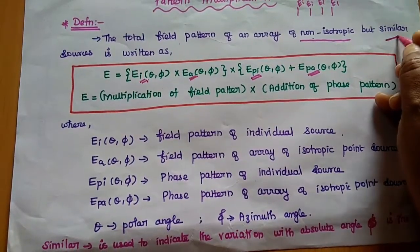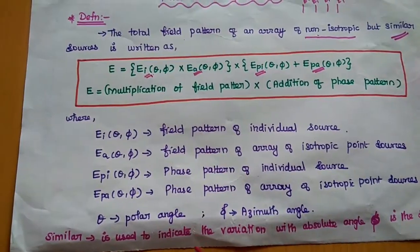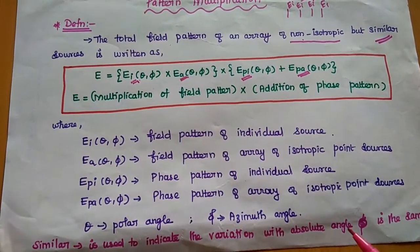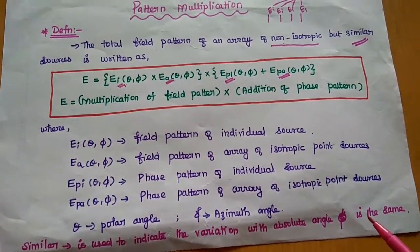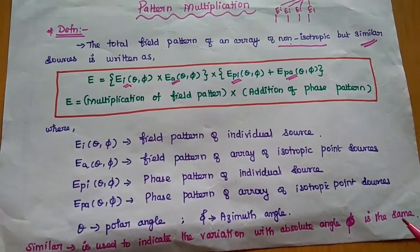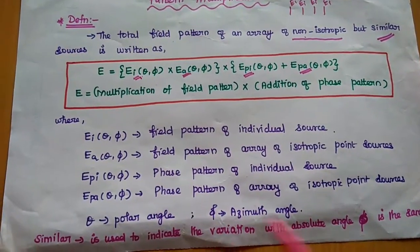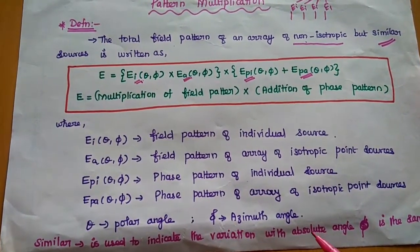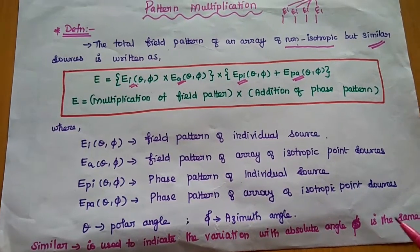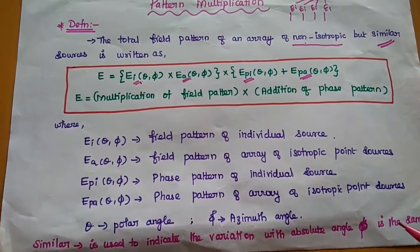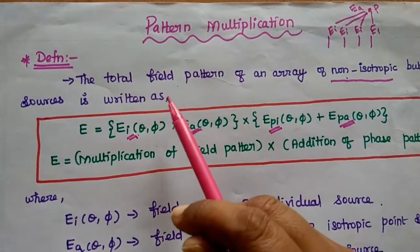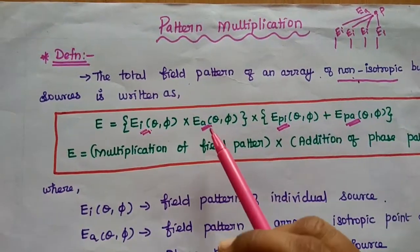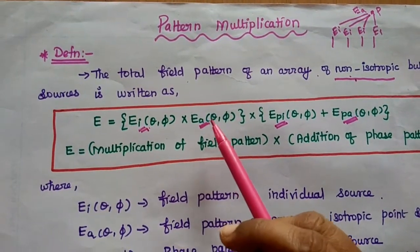Next, the term 'similar' represents the indication of variation with absolute angle φ, which is the same for both amplitude and phase. We use this to find the total field pattern of an array of non-isotropic sources by using an array of isotropic sources. θ and φ are the spatial coordinate system variables.